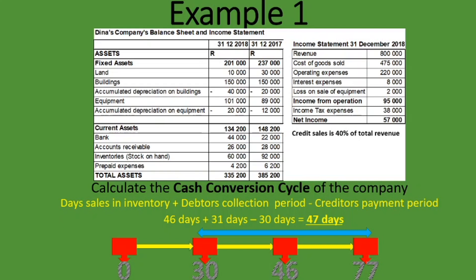The operating cycle is Days Sales in Inventory plus Debtors Collection Period — it runs from day zero all the way to day 77, totaling 77 days. The cash conversion cycle, however, is 47 days because it starts from the day we paid suppliers (day 30), not from the day we bought inventory. I hope you've gained value from this lesson — please leave questions in the comments, subscribe, like, and share.